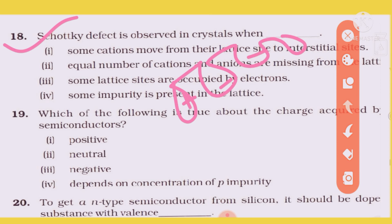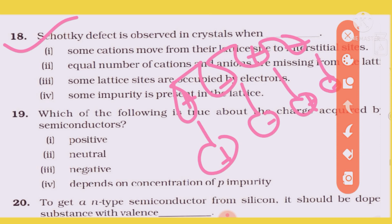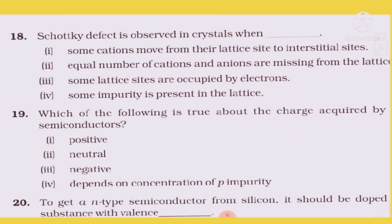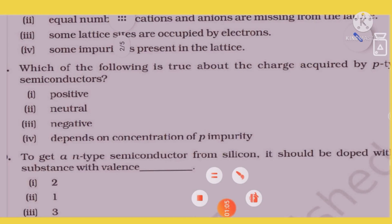In Schottky defect, equal numbers of cations and anions are missing. The answer for Question 18 is the second option — XY type crystal.